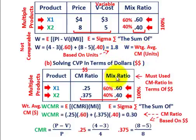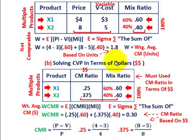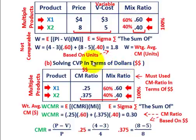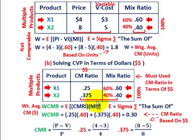Let's look at how we'd apply these two different methods. When you're solving with units, you use the weighted contribution margin as price versus variable cost times the mix ratio. When solving for dollars, you do the same — price versus variable cost times the mix ratio — but you divide by the unit price. That's the key difference when solving in units versus dollars.